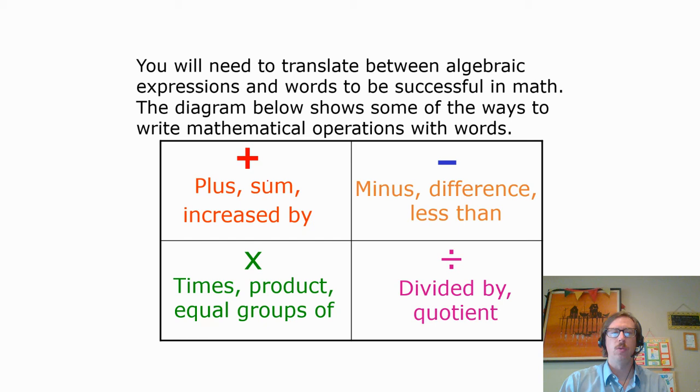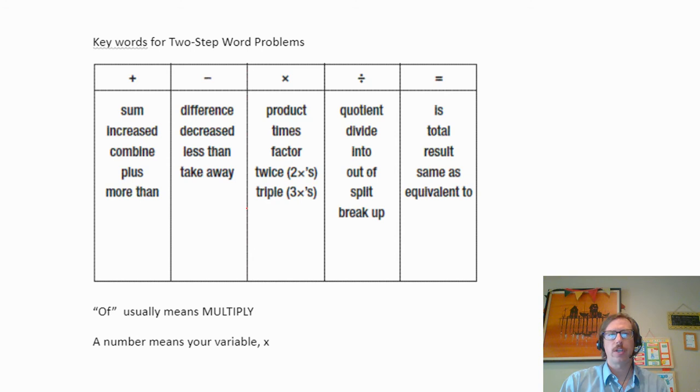So here is a really thorough one that I like to use. A few key ideas. First off, there's two missing words that I want you to add here. Under multiplying, we want to use the word of or each. Typically, those are words used in word problems to mean multiplication. Product, times, factor, those can all use multiplication. Sum, combine, plus, more than. Difference, decrease, less than, take away. Those are all subtraction. And then division is usually quotient or divided into or out of or split or broken up. Is, result, same as, equivalent to, total, those are all signs meaning equals. And one quick thing. Well, I'll get there when I get there. So let's begin.